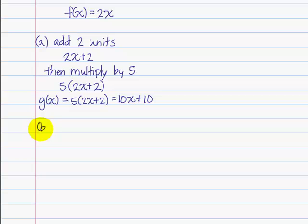In part b, we're asked to do the same two things, but in the reverse order. So first, we're told to multiply by a factor of 5.